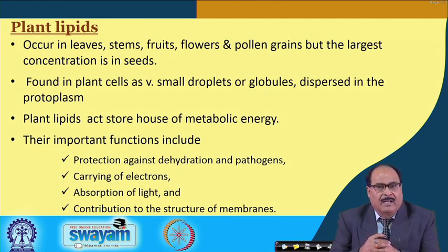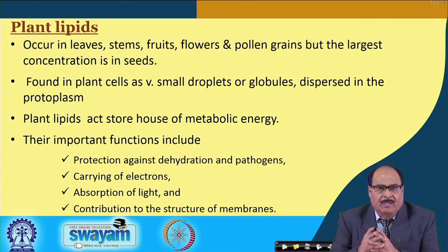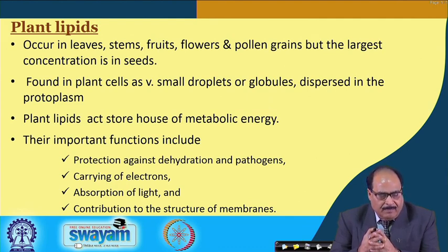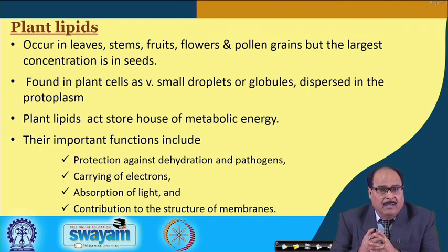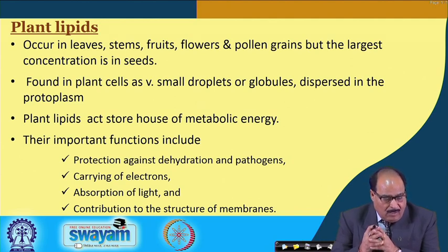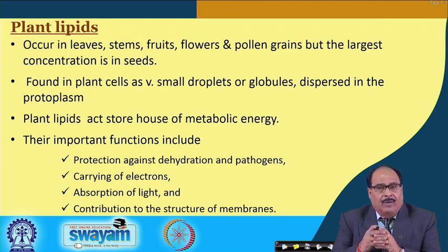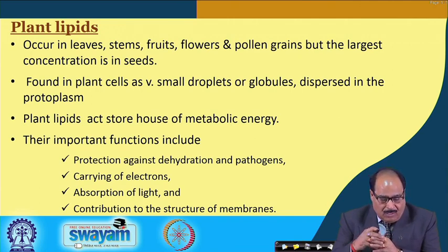Plant lipids occur in leaves, stems, flowers, fruits and pollen grains, but the largest concentration of lipid in plants is found in seeds. They are found in plant cells as very small droplets or globules dispersed in the protoplasm. Plant lipids act as a storehouse of metabolic energy, and their important functions in the plant include protection against dehydration and pathogens, carrying of electrons, absorption of light, and contribution to the structure of membranes.